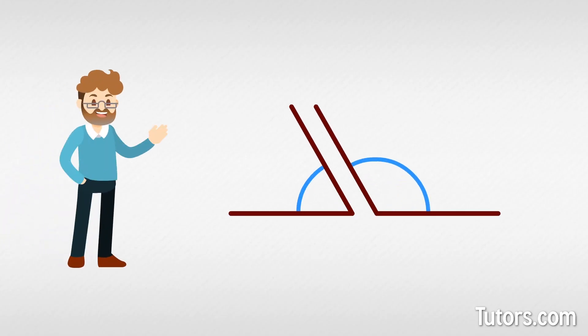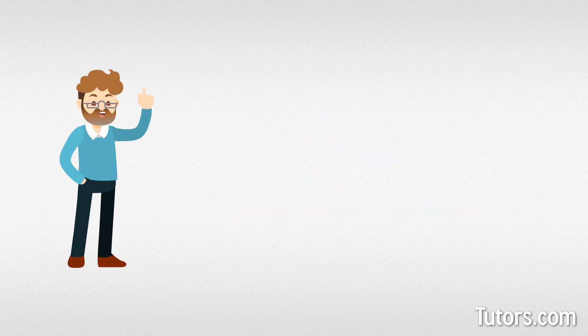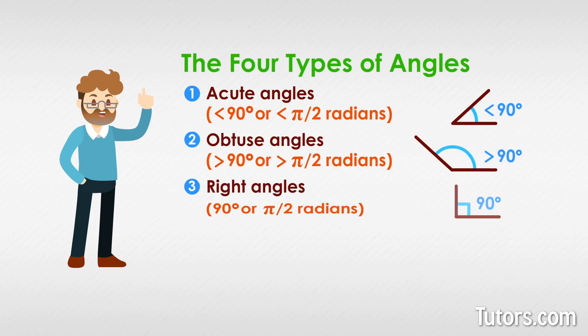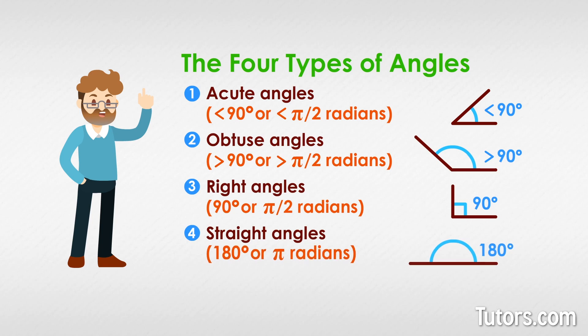Angles and angle pairs are everywhere in geometry. The four types of angles in geometry are acute angles, obtuse angles, right angles, and straight angles.